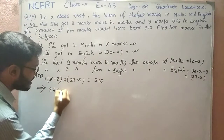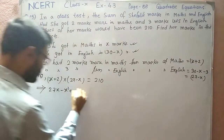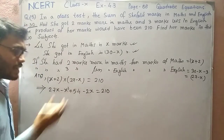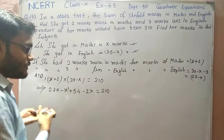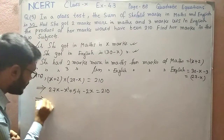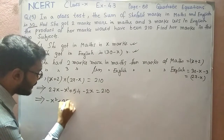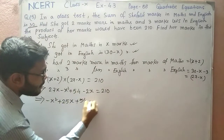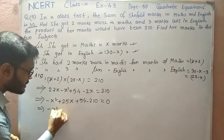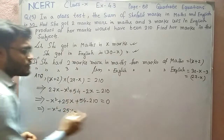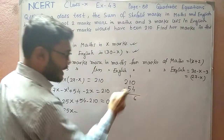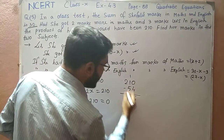Multiplying out: 27x minus x squared plus 54 minus 2x equals 210. Taking all elements to the left-hand side and putting 0 on the right: minus x squared plus 25x plus 54 minus 210 equals 0. Subtracting 210 from 54 gives minus 156, so we have minus x squared plus 25x minus 156 equals 0.